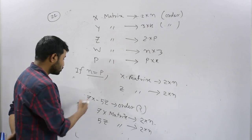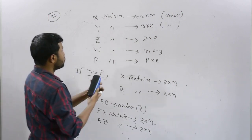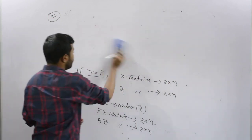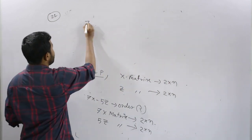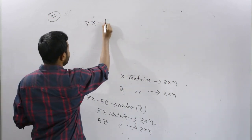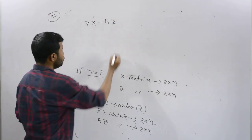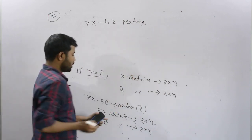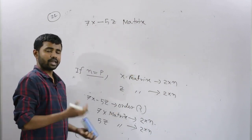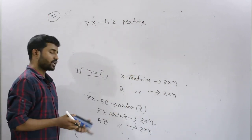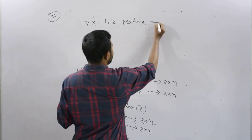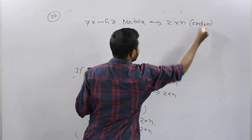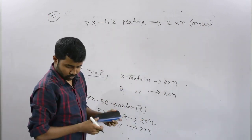For matrix subtraction, both matrices must have the same order. Here the order is the same, so we can subtract. A matrix minus the other matrix: the order of A matrix is 2 into n. So the resulting matrix A has order 2 into n.